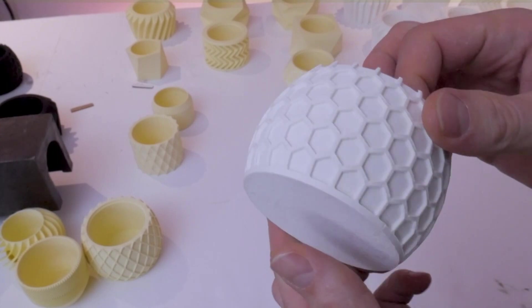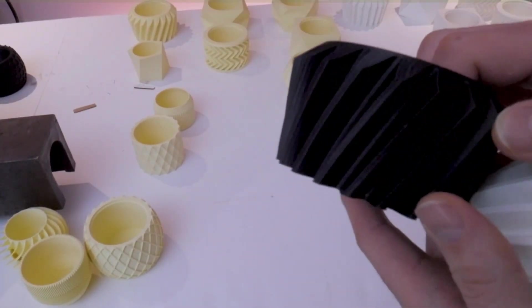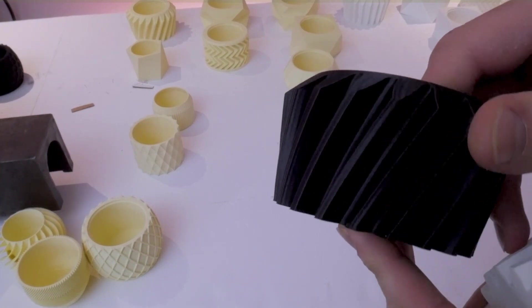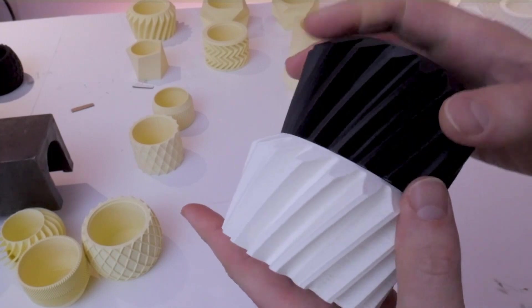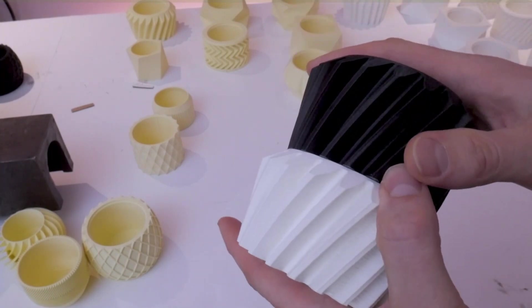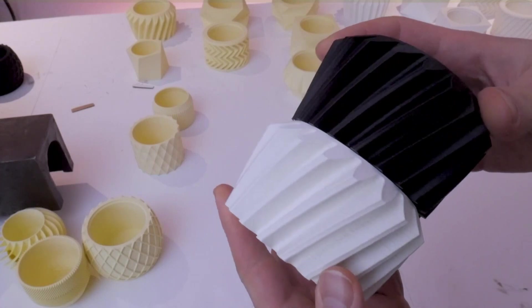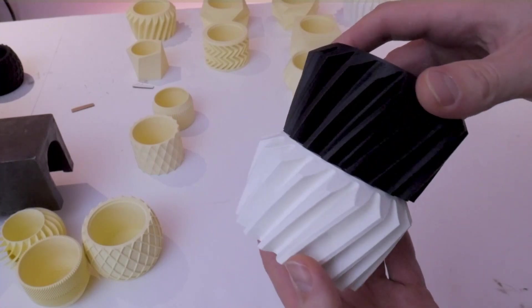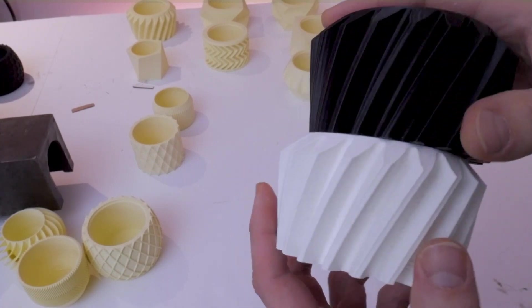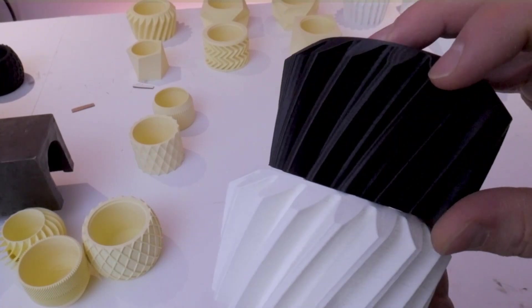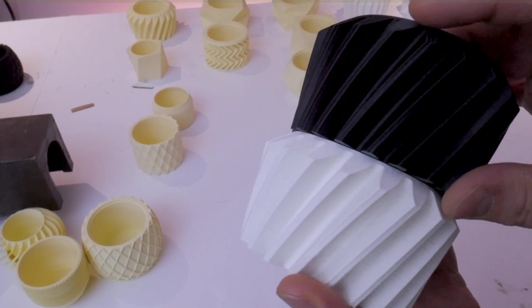Comparing the eSun matte PLA parts to the same parts printed in regular PLA, you can certainly see a difference between the sheen. It might not necessarily be a fair comparison between a black and white part like this, but on the black part you can definitely see more reflections. When it comes to the matte aspect of this filament, it performs really well. Compared to some of the most matte filaments I've tested in the past, it's right up there. You'll definitely be happy with the sheen and the color.